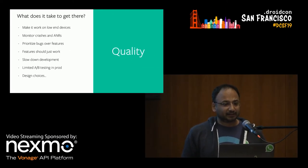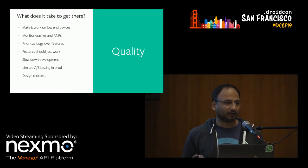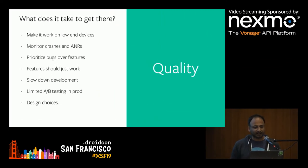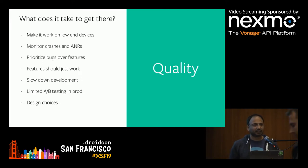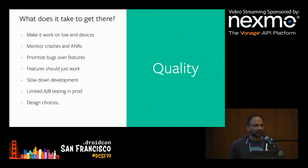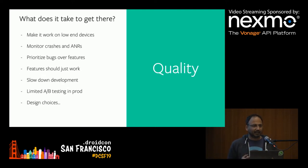What did it take to get there? We make it work on low-end devices, and a lot of people at WhatsApp use lower-end or older phones. When we build product, we test on those phones and make sure the UI works on small screens. We monitor crashes and ANRs — application-not-responding events — very closely, and we don't launch releases until we fix those ANRs. Engineers get notified, and we will prioritize bug-fixing over features. It's very rare that a developer will say they can't fix a high-firing crash because of a new feature — that's just not part of our culture. We believe features should work, and we'll spend a lot of time getting them to work to the point that it's almost delightful.